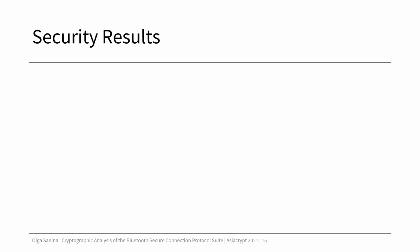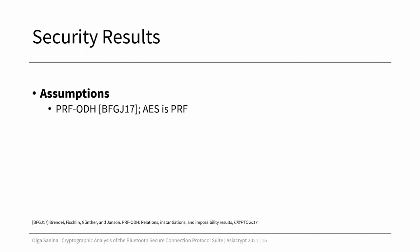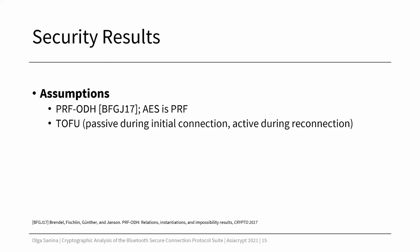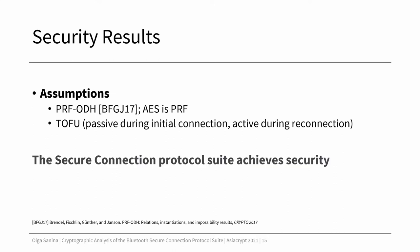Before presenting the results, I will show you the assumptions we used to achieve them. First, we used the PRF-ODH assumption from the paper by Brendel et al. from Crypto 2017. Then we also assumed that the KDF used for session key derivation is a pseudo-random function. We also assumed trust on first use, so the adversary stays passive during the initial connection and becomes active during the reconnection of two devices. Under these assumptions, the secure connection protocol suite is a secure trust-on-first-use key exchange. You can check the bounds and details of the proof in the paper.